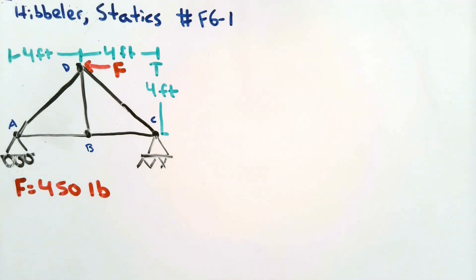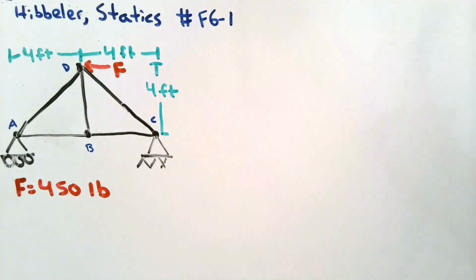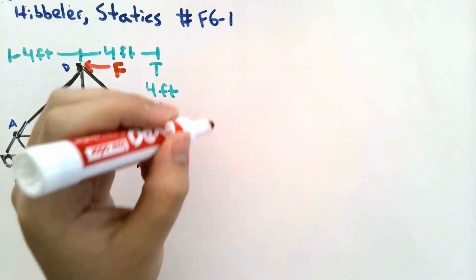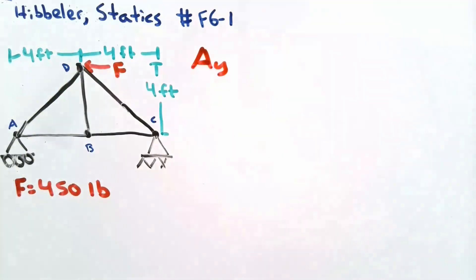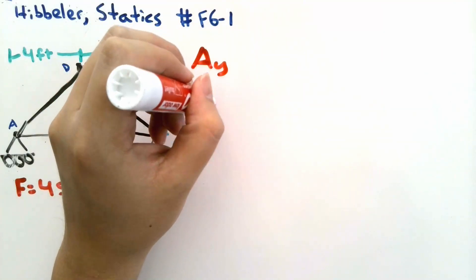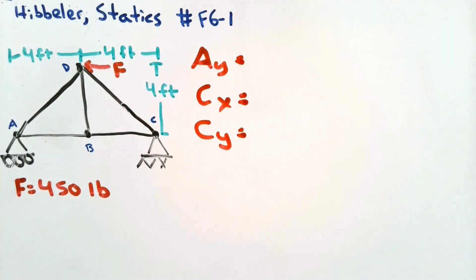So let's start this problem. In a problem such as this, we first want to eliminate as many unknowns as we can. Right now we only have one known force F of 450 pounds. However, we also have the knowledge that a hinge provides a reaction in the x and in the y direction, and a roller in this case will provide a reaction in the y direction. So we need to first find those reactions at the roller and also at the hinge.